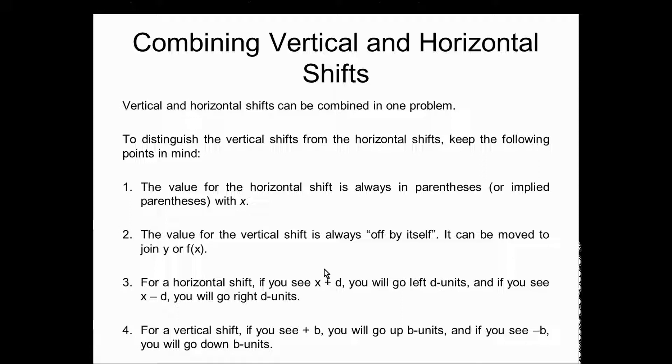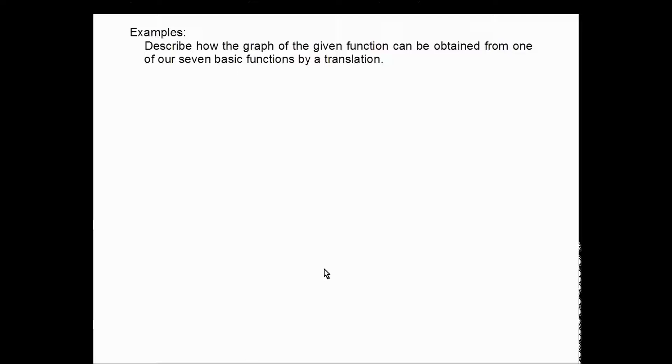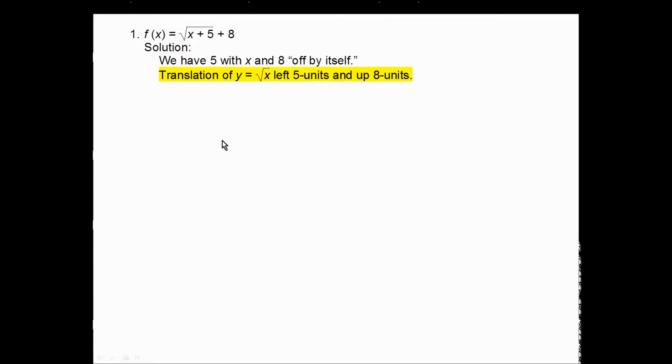Some examples — describe how the graph of the given function can be obtained from one of our seven basic functions by a translation. Number 1: f(x) = √(x+5) + 8. The plus 5 is with x (horizontal), the 8 is off by itself (vertical). The parent function is y = √x. Since it's x + 5, opposite of what you see: left 5 units. The 8 is off by itself: up 8 units. So it's a translation of y = √x, left 5 units and up 8.